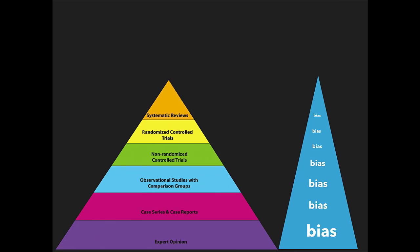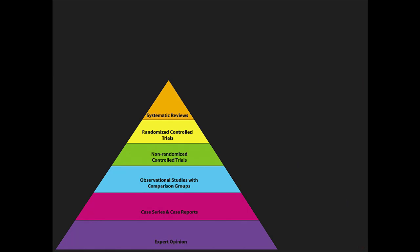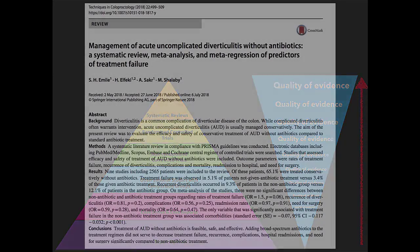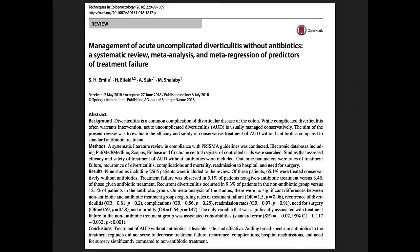The Oxford hierarchy of evidence pyramid has studies with a low bias at the apex of the pyramid and studies with increasing bias further down towards the base. Similarly, the top of the pyramid contains studies with high quality of evidence, which decreases the further down you go. The aim of the study was to evaluate the efficacy and safety of conservative treatment of acute uncomplicated diverticulitis without antibiotics compared to standard antibiotic treatment.